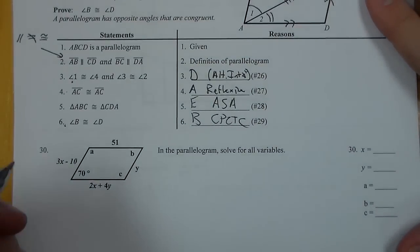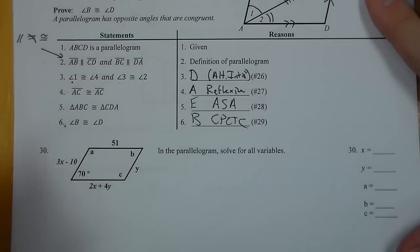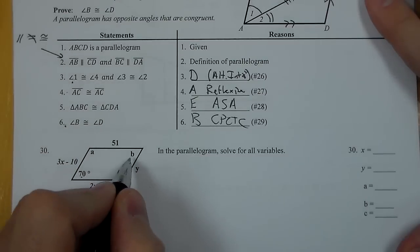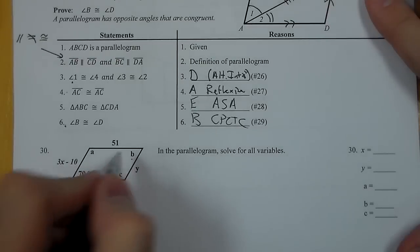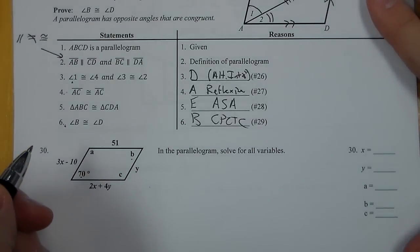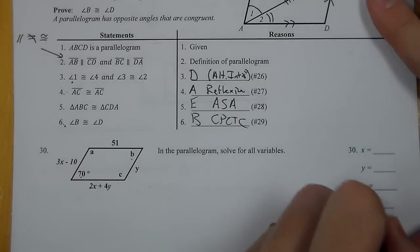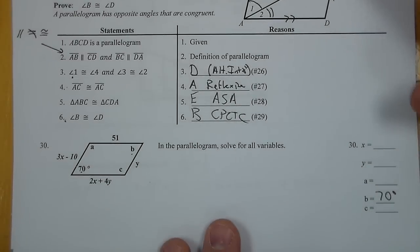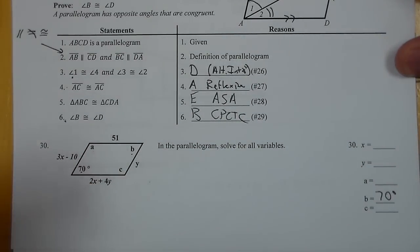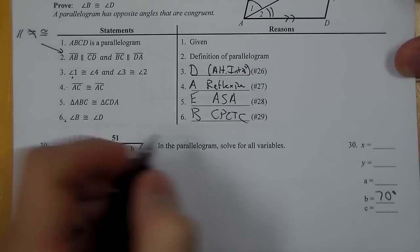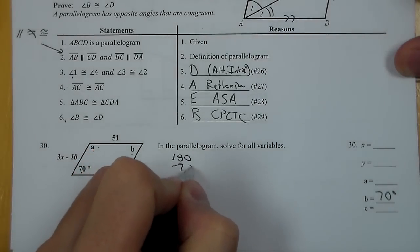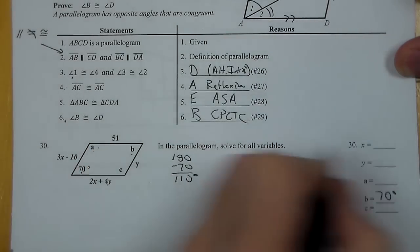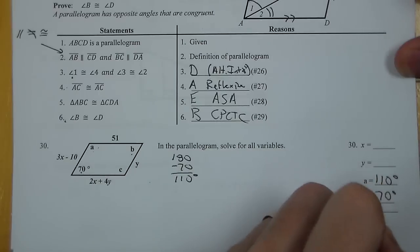On to number 30. For number 30, I want to start with angles with ABC. I know that 70 and B are the same because they're opposite angles in a parallelogram, so B is 70 degrees. I know that A and C are also the same, but I first need to use the fact they're supplementary and do 180 minus 70 to get 110 for A and C.